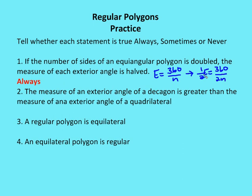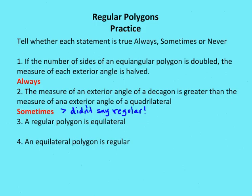Number two: the measure of an exterior angle of a decagon is greater than the measure of an exterior angle of a quadrilateral. The answer is sometimes, because the problem didn't say regular. You have to look for the word regular — it must say regular for all angles to be congruent. If it did say regular, then the answer would be never, since a decagon has more sides and thus smaller exterior angles.